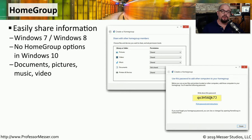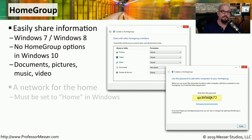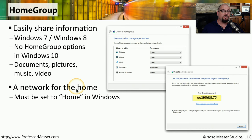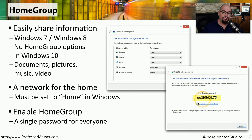If you're setting up a Windows Home Group at home, you'll configure all of those settings in your Control Panel under Home Group. This feature is available in Windows 7, Windows 8, and Windows 8.1, but Home Group has been removed from Windows 10 and the applet is no longer available there. If you are setting up a Home Group in Windows 7, 8, or 8.1, make sure your network profile is set to Home. You can then create a Home Group, and you'll be given a shared password that you can put on all the other devices that are part of this Home Group.